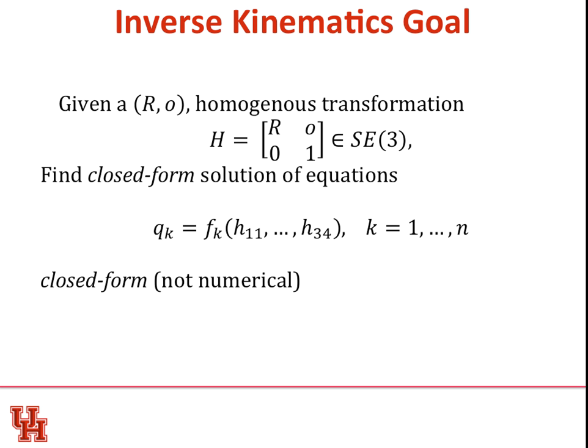So your goal, and if you enjoy challenges, think of it like this. Somebody hands you a rotation matrix R and offset O, which you get from this homogenous transformation. We want to find closed form solutions of equations so that every joint is a function just of some function. And I want a closed form, I don't want a numerical, because what you could do is you could throw this into an optimization routine, and it would iterate and do some sort of gradient descent until you got within machine precision of the right answer. I don't want you to do that. Can you think of why that might be a problem?